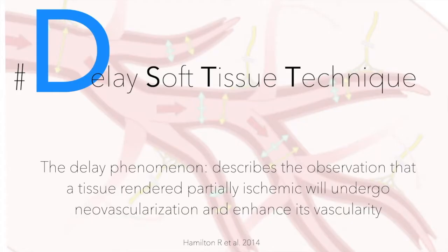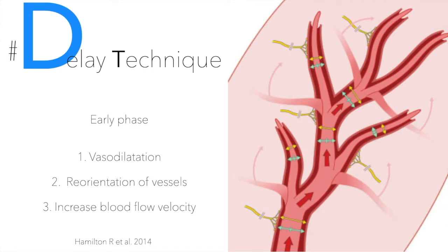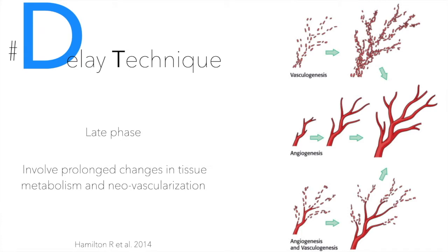The delayed soft tissue technique is not something new in medicine — it is a technique used in reconstructive and plastic surgery. It is based on the delay phenomenon, which describes the observation that tissue rendered partially ischemic will undergo neovascularization and enhanced vascularity. When we elevate a flap, we increase neovascularization and vascularity. The technique works in two steps: an early phase within the first 48 hours involving vasodilation, vessel reorientation, and increased blood flow; and a late phase involving prolonged changes in tissue metabolism and neovascularization over the first 14 days.